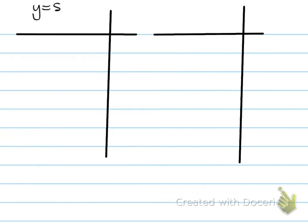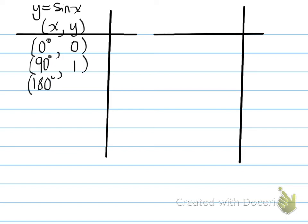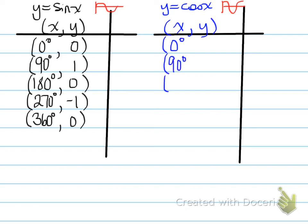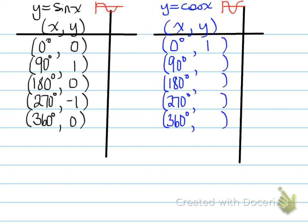So how does that help us? Our sine x function's basic coordinates are: (0, 0), (90, 1), (180, 0), (270, −1), (360, 0) — that is our sine wave. Our cosine wave has coordinates: (0, 1), (90, 0), (180, −1), (270, 0), (360, 1).